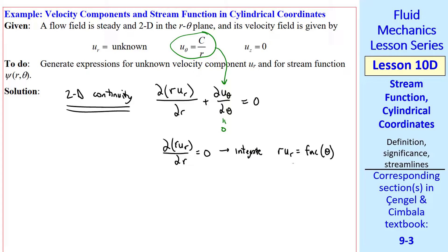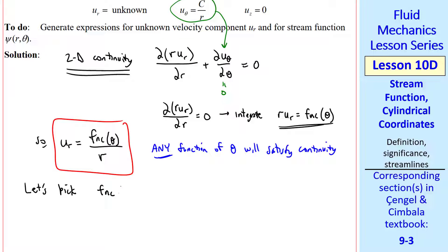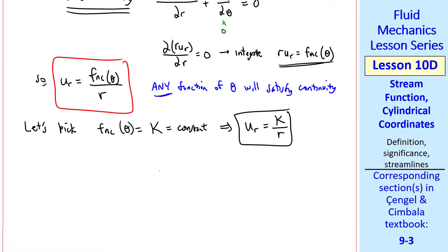Which we can integrate. We get r u_r as a function of theta since this is a partial integration. So our answer is u_r as a function of theta over r. And any function of theta will satisfy continuity. You can see that because if we plug u_r back into our continuity equation, this r cancels this r. And we're left with a function of theta, which is not a function of r at all. So we get zero plus zero equals zero. Well let's pick this function of theta to equal k, which is a constant. So this function of theta is not really a function of theta at all, but just a constant. So this is kind of a trivial case, but it's a valid function that we can pick. So our u_r is just constant k over r. You can pick other functions of theta if you choose.